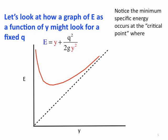Now, notice here, the minimum specific energy occurs at what we call a critical point. The critical point is where dE dy is equal to 0. That is, we have simply where the curve reaches its minimum value.